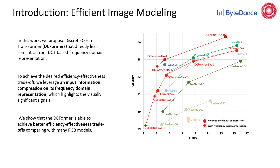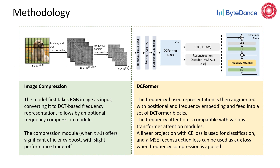Our model first takes RGB images as input, converting them to DCT-based frequency representation, followed by an optional frequency compression module. The compression module offers a significant efficiency boost with a slight performance trade-off. The frequency-based representation is then augmented with positional and frequency embeddings and fed to a set of DC former blocks.